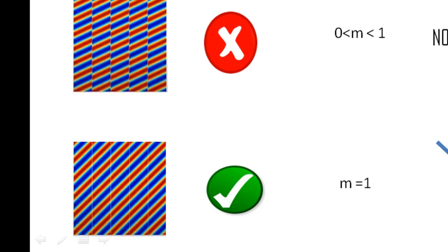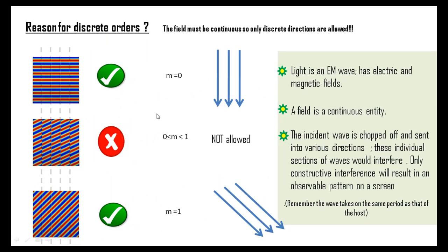Therefore, we make a crucial observation. The field must be continuous so only discrete directions are allowed. These allowed directions are called diffraction orders and these are calculated using the grating equation.